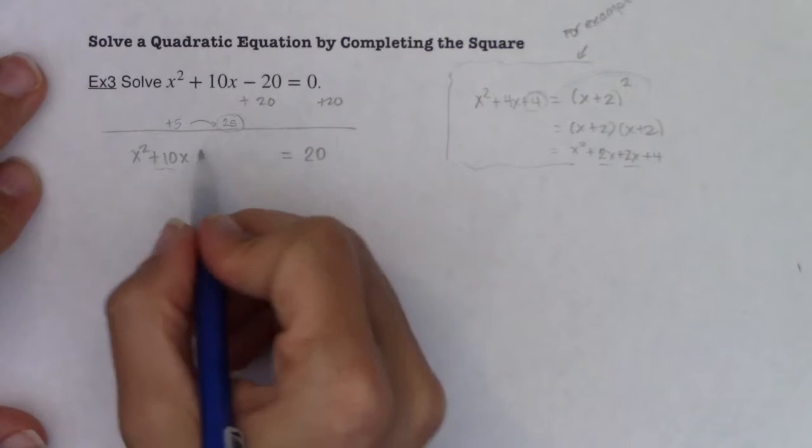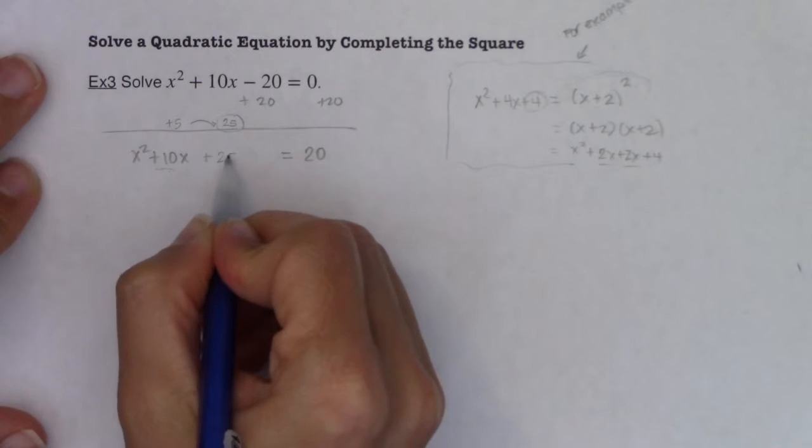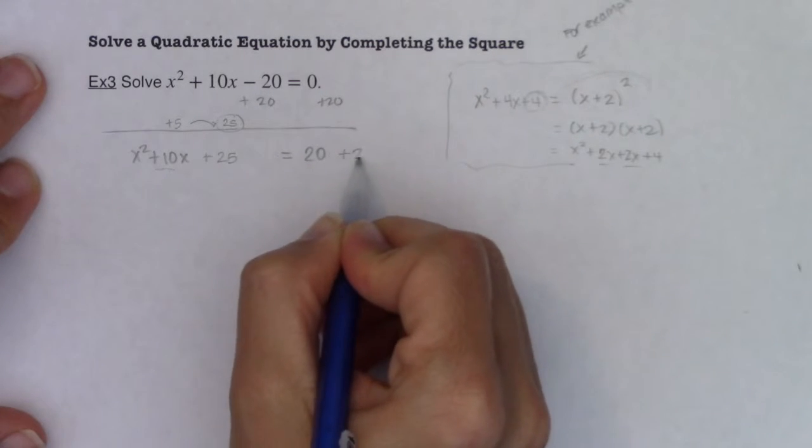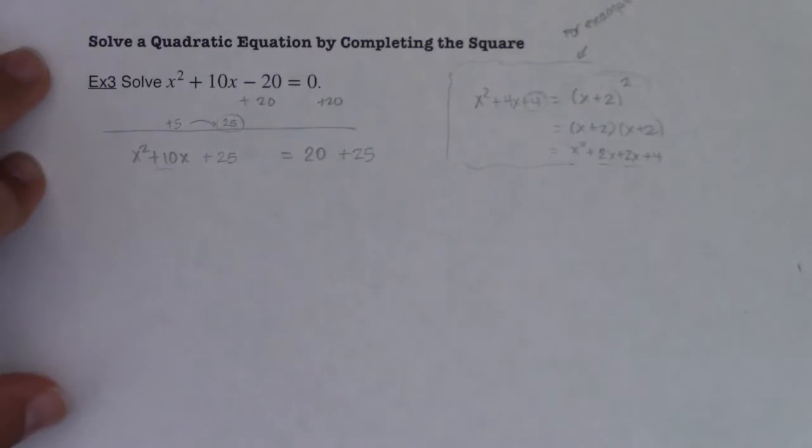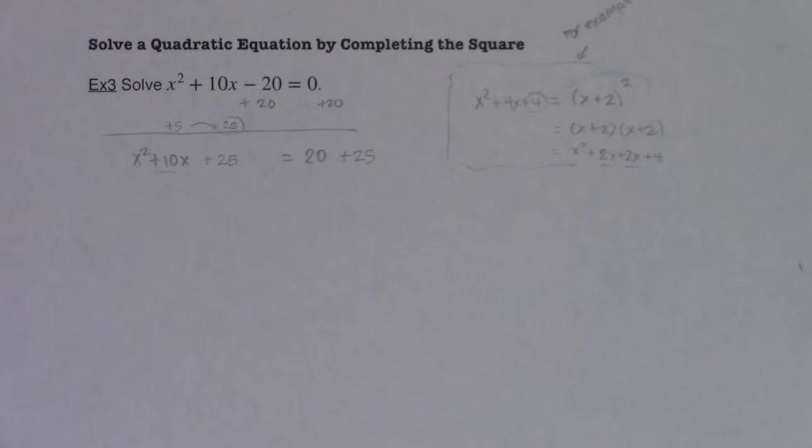So that's the number that you want to drop here. I'm going to put plus 25 here. And to balance it out, I'm going to put plus 25 there. So let me repeat this. If you ever want to complete a square, all right, get your variables.